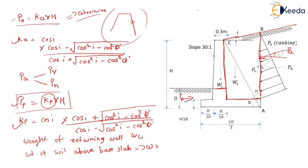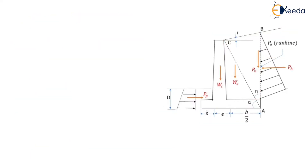We have listed out the forces acting on this retaining wall. These forces are: vertical component of active earth pressure PV, horizontal component of active earth pressure PH, the passive earth pressure PP, weight of the retaining wall WC, and weight of the soil above the base slab WS. These are the forces which are going to affect the stability of the retaining wall.